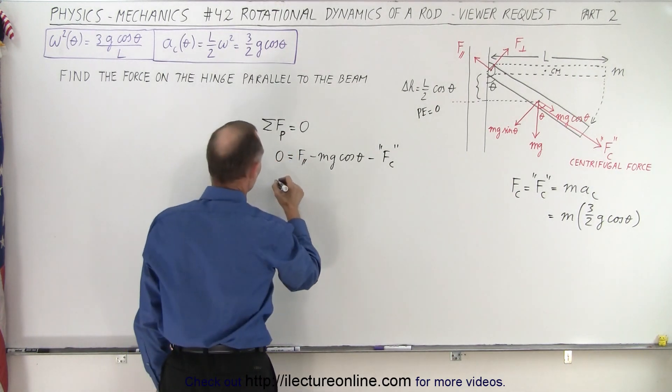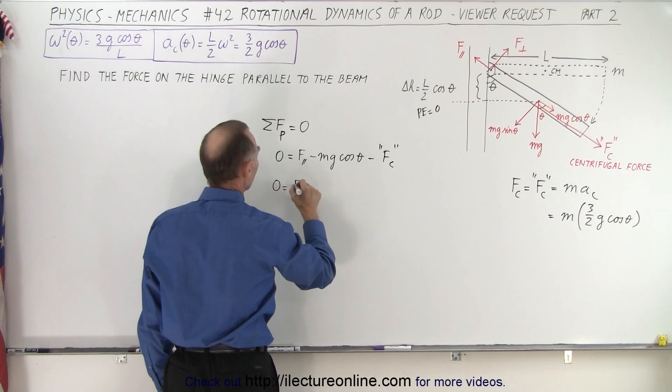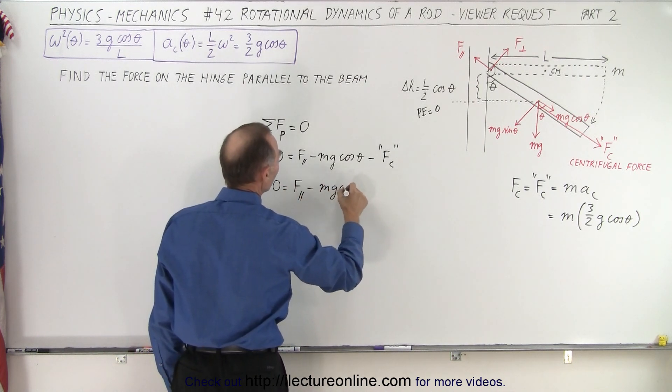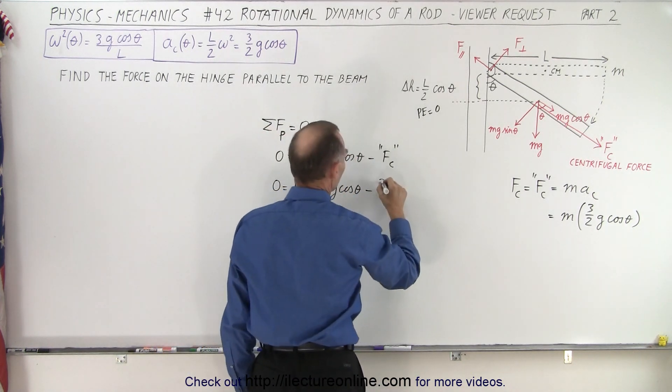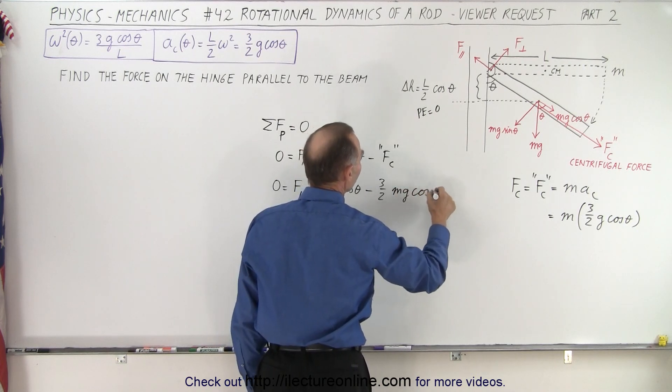Now plugging in the numbers or the equivalents, we have zero is equal to force parallel on the hinge minus mg cosine of theta and minus three halves mg cosine of theta.